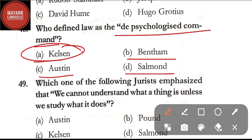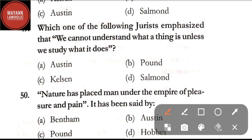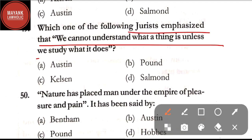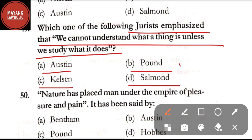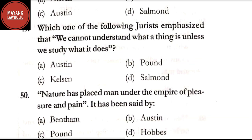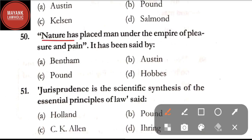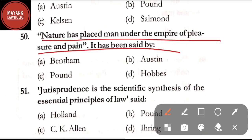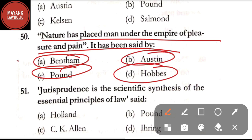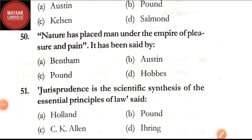Question number 48: who defined law as the 'de-psychologized command' — option A: Kelsen; option B: Bentham; option C: Austin; option D: Salmond. The correct answer is option A, Kelsen. Question number 49: which jurist emphasized that we cannot understand a thing unless we study what it does — option A: Austin; option B: Pound; option C: Kelsen; option D: Salmond. The correct answer is option B, Pound. Question number 50: 'Nature has placed men under the empire of pleasure and pain' — said by Bentham, Austin, Pound, or Hobbes. The correct answer is option A, Bentham.